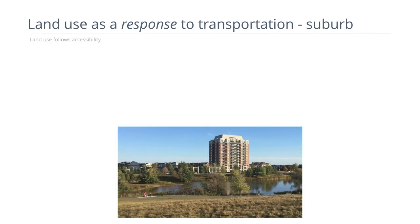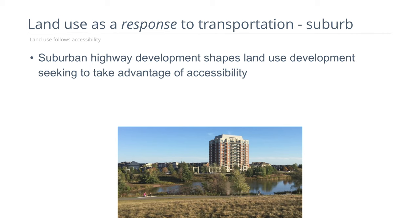Another way of looking at this is land use as a response to transportation in the suburban context — land use follows the provision of transportation accessibility. In this case, the development of the interstate highway system in the 1960s shaped land use by providing accessibility to areas that were previously not feasible for residential development because it took too long to reach the core of jobs in the center of the city.